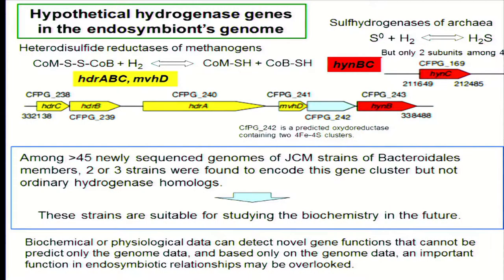We found homologous genes with archaea that are probably involved in hydrogen metabolism: one is a sulfhydrogenase of archaea, and another is a heterodisulfide reductase of methanogens. However, sulfur is not expected in the gut environment, and coenzyme M and coenzyme B are archaeal-specific cofactors, while the endosymbiont is a bacterium. So this is a candidate function but more biochemical investigation is necessary to conclude. Biochemical and physiological data can detect overall gene functions that cannot be predicted from genome data alone — important endosymbiotic functions may be overlooked when relying only on genome data.